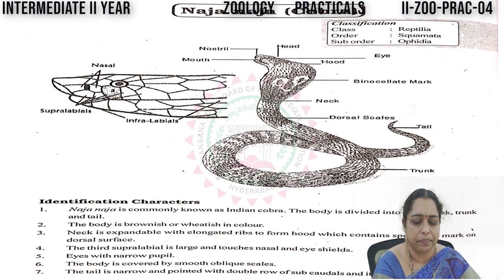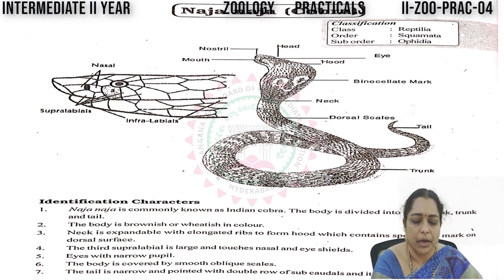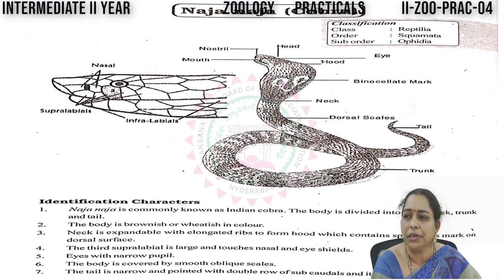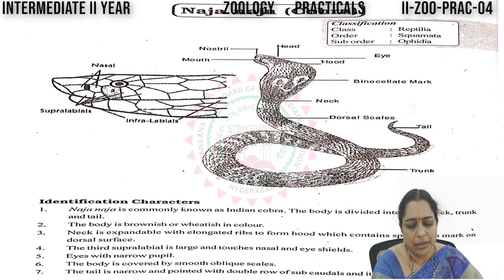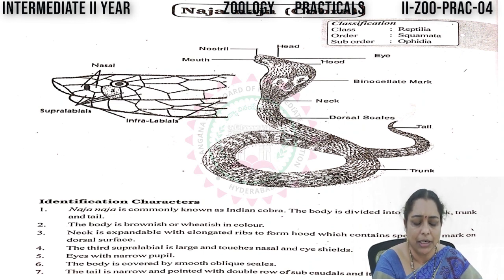The next specimen is Naja naja, commonly known as cobra. The classification is: Class Reptilia, Order Squamata, Suborder Ophidia. The diagram labels include: nostrils, mouth, head and hood, eye, binocular mark, neck, dorsal scales, trunk, and tail.